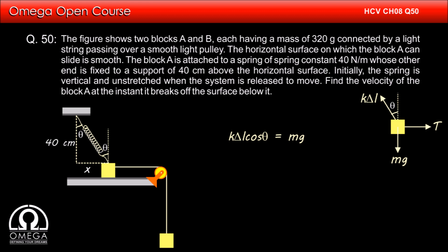Putting the value of delta L and cos theta, we get 40 root under 40 square plus x square minus 40 divided by 100 into 40 divided by root under 40 square plus x square is equal to 3.2. Please note that the elongation of the spring is divided by 100 to convert it into meters.